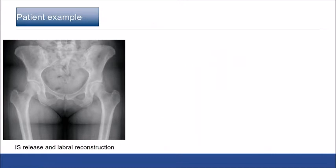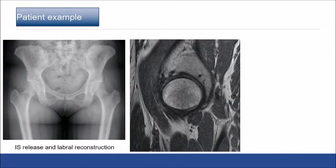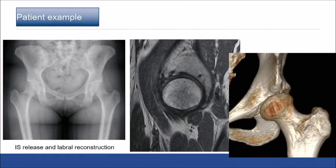Here's a patient example. This patient had an iliopsoas tendon release and labral reconstruction on the left hip. You can see on MRI the multiple anchors and alterations at the anterior rim, and on CT scan a partial rim takedown and a CAM resection. This patient had a PAO with a good result.